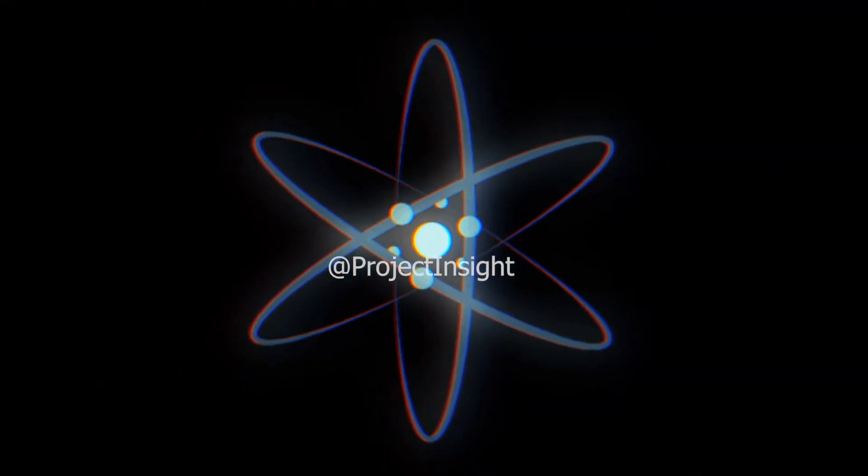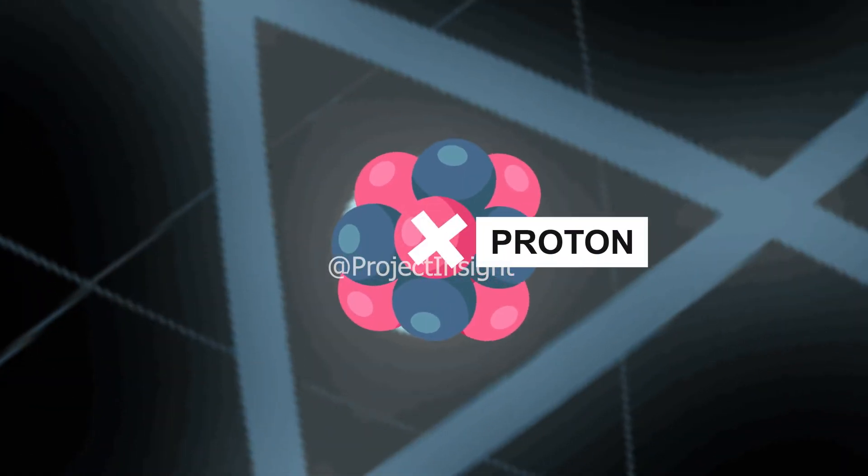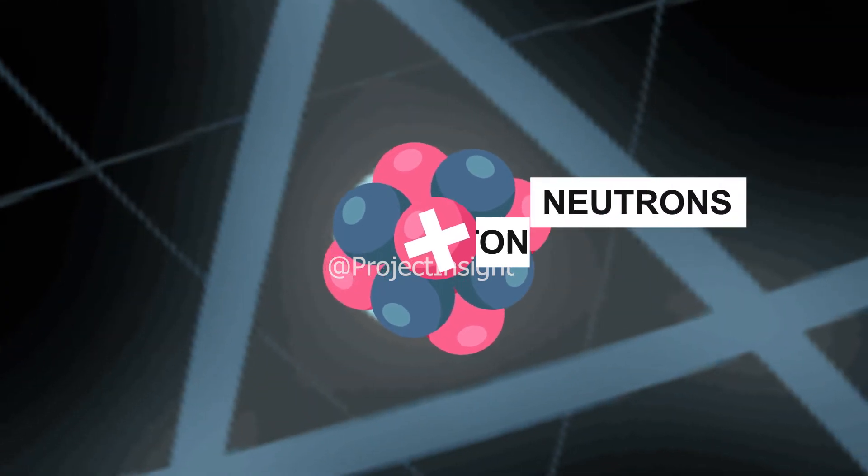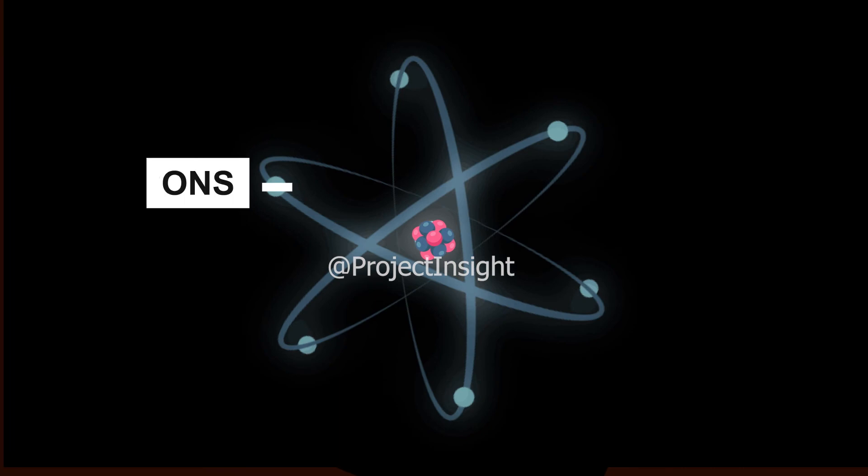And matter is composed of tiny particles which we call atoms. An atom is further composed of a nucleus which consists of positively charged protons and electrically neutral neutrons, and negatively charged electrons that revolve around the nucleus.